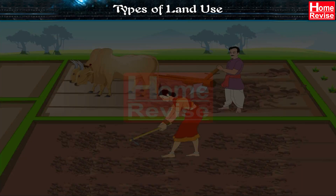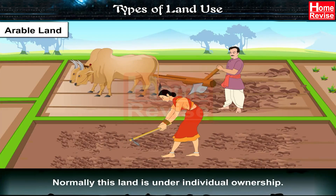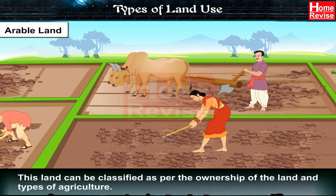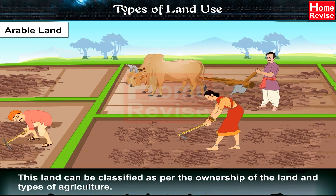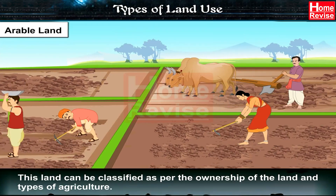Types of Land Use. Arable Land: This is the land under cultivation. Normally, this land is under individual ownership. This land can be classified as per the ownership of the land and types of agriculture.